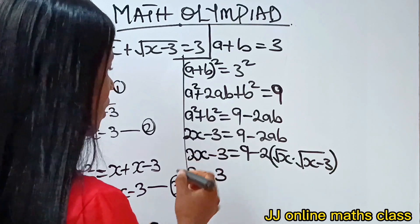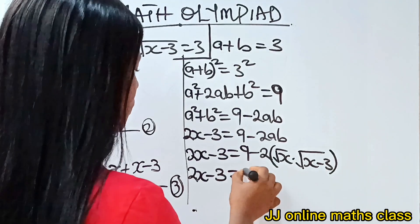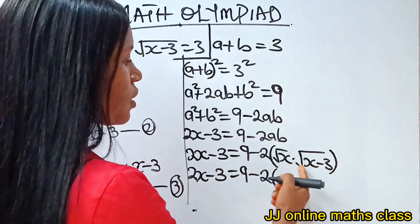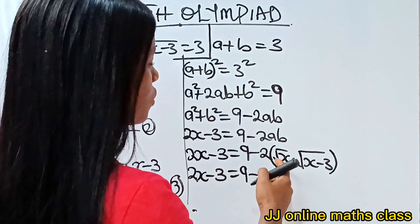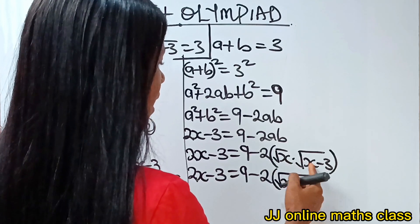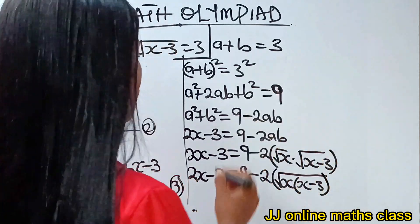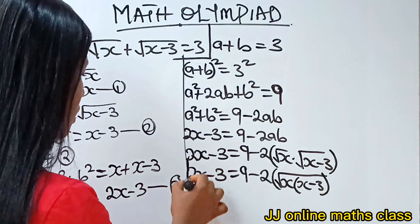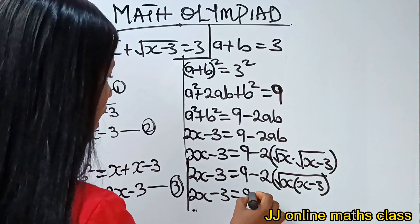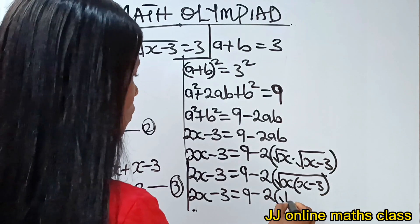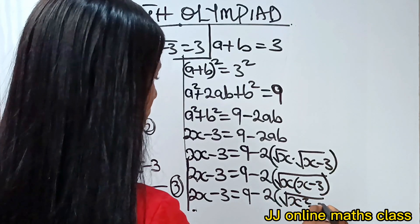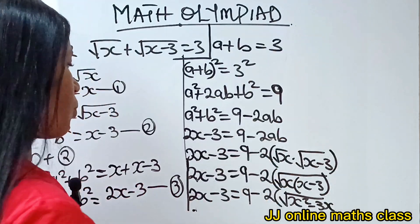Since we have square roots multiplied by square roots, we can bring them under the same root sign. So: 2x − 3 = 9 − 2√(x(x − 3)). Expanding inside: x · x = x² and x · (−3) = −3x, giving 2x − 3 = 9 − 2√(x² − 3x).